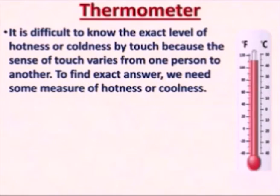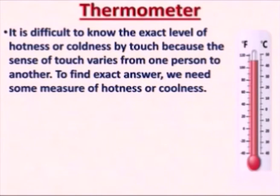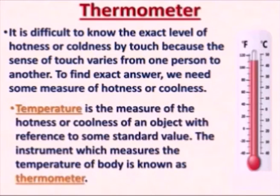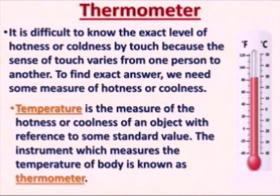Do you know that it is difficult to know the exact level of hotness or coldness by touch? Because the sense of touch varies from one person to another. To find the exact answer we need some measure of hotness or coolness. So temperature is the measure of the hotness or coolness of an object with reference to some standard value. The instrument which measures the temperature of a body is known as a thermometer.